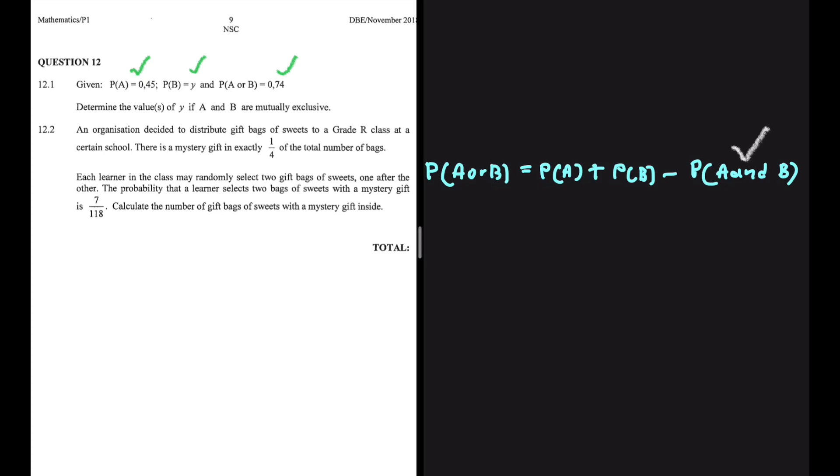That leaves us with the probability of A or B being equals to the probability of A plus B. In our case, the probability of A or B is 0.74.